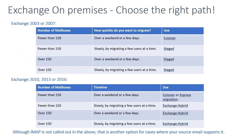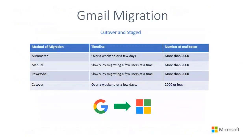The last migration option is IMAP migration, used when your source is different from Exchange. IMAP migration allows you to migrate mailboxes and mail folders only — it does not migrate tasks, contacts, or calendars. It has a limitation of 500,000 items per mailbox and an email size limit of 35 megabytes.